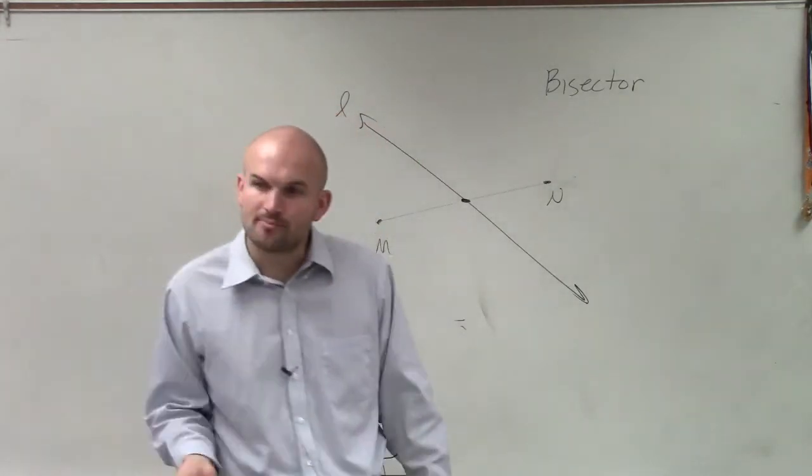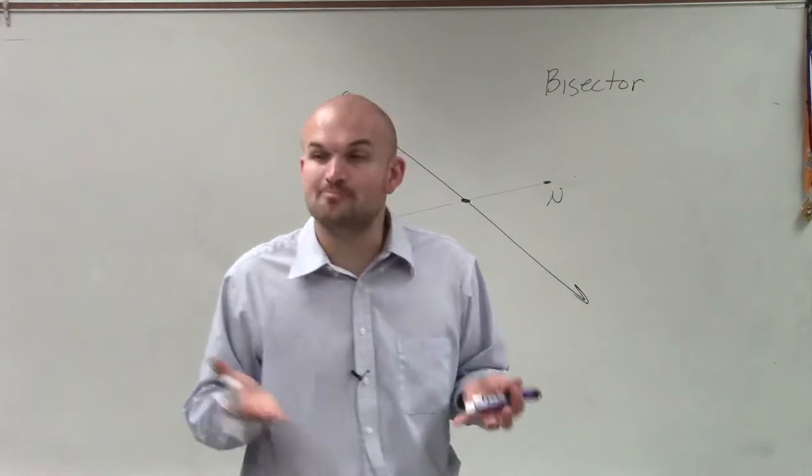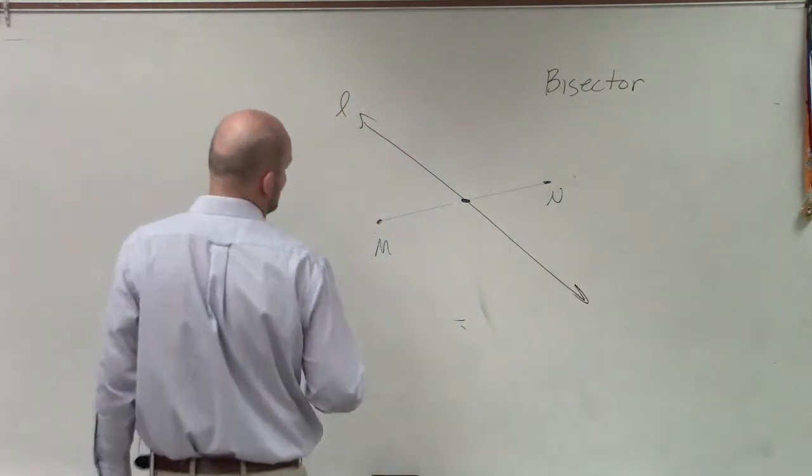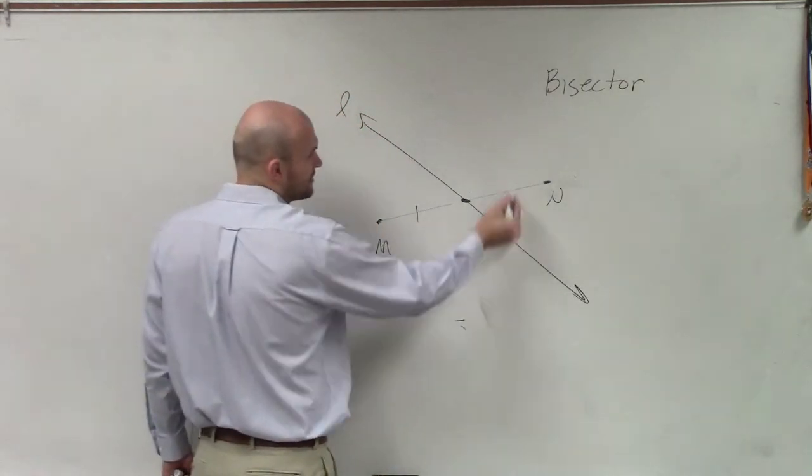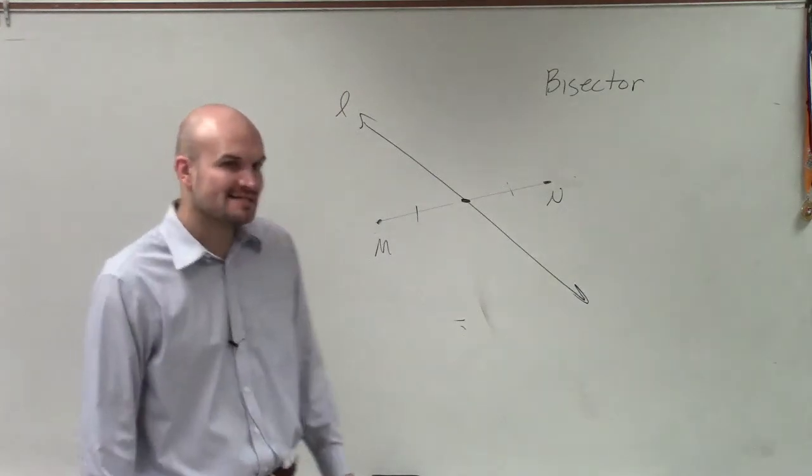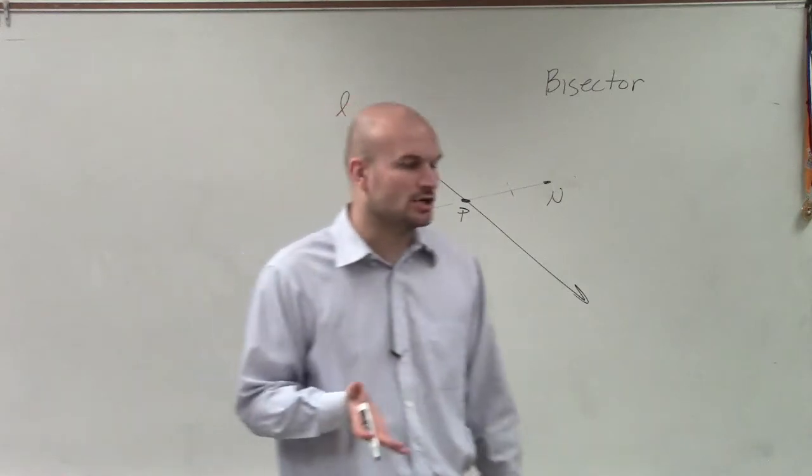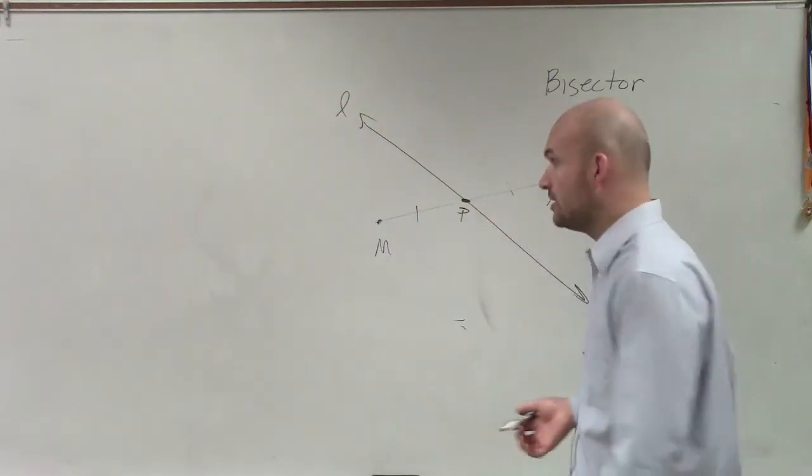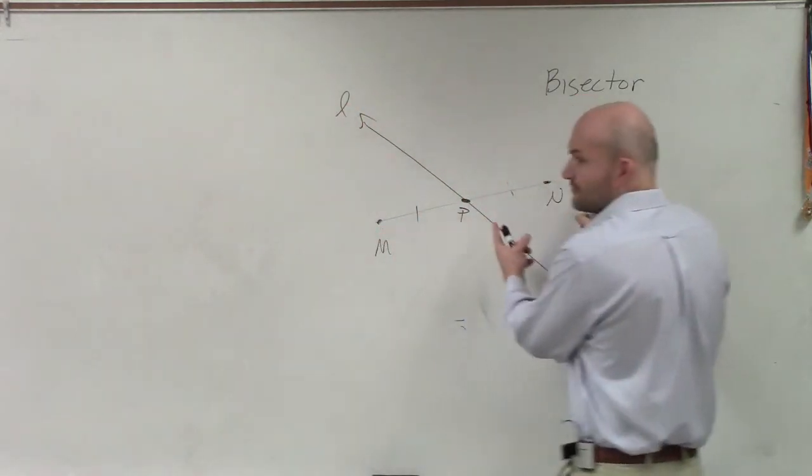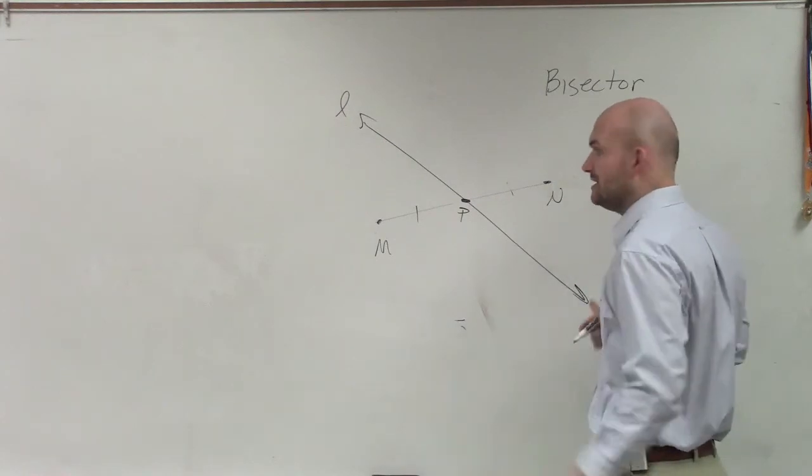But if it intersects at a certain point, we say it bisects it. The way we're going to know if it bisects is if the point that it crossed has now bisected our line MN. Therefore, the two sides of our segment are now equal in measure.